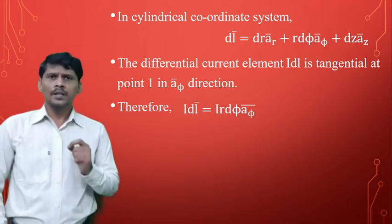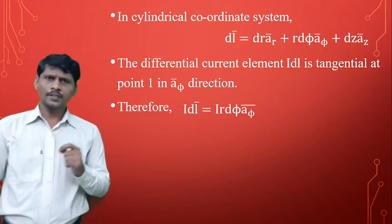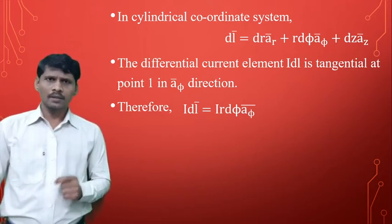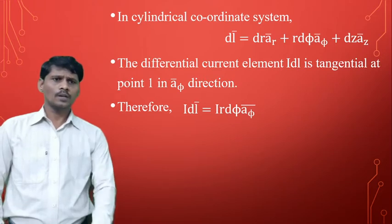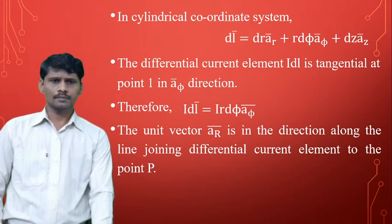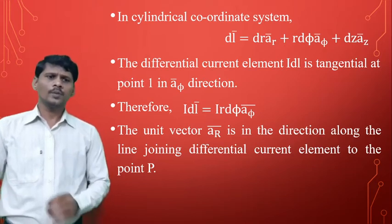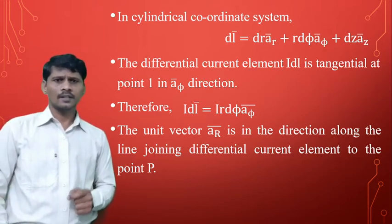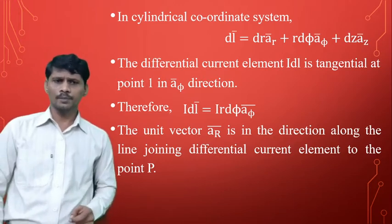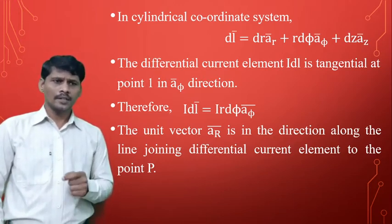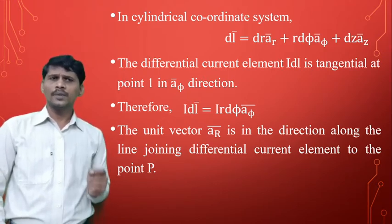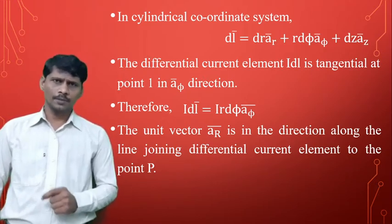I times dl bar is the differential current element. Therefore I times dl bar equals I r dφ times aφ bar. The unit vector AR bar is in the direction along the line joining the differential current element to point P.